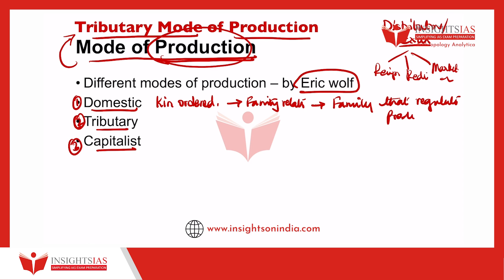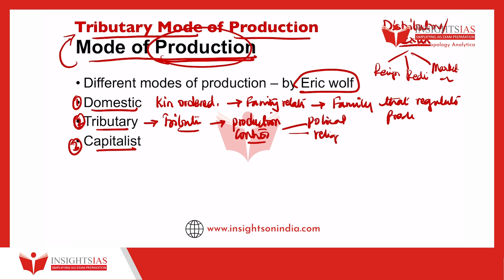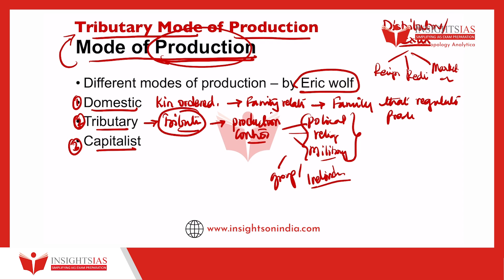In tributary mode of production, the primary producer has to pay a tribute, as the name itself suggests. The rest of the production is kept by the producer. The tribute has to be paid in the form of material goods or labor to another individual or group who controls the production — through political control, religious control, or military force. An individual or group controls the production, and therefore the person producing goods or services has to pay a tribute.